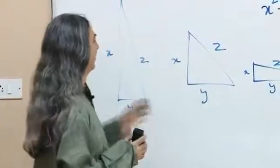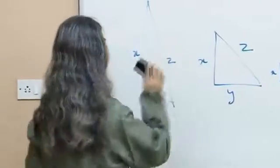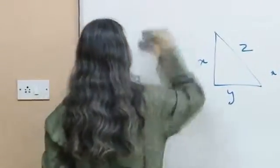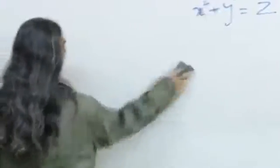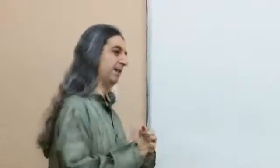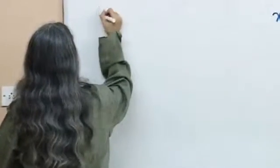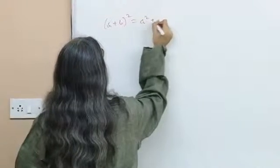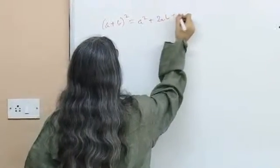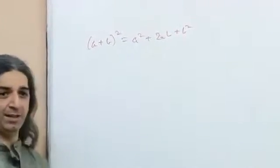So let us prove Pythagoras theorem. For that we require one more result first. That something else is: what is A plus B the whole squared? A plus B the whole squared equals A squared plus 2AB plus B squared. Brilliant — but why?